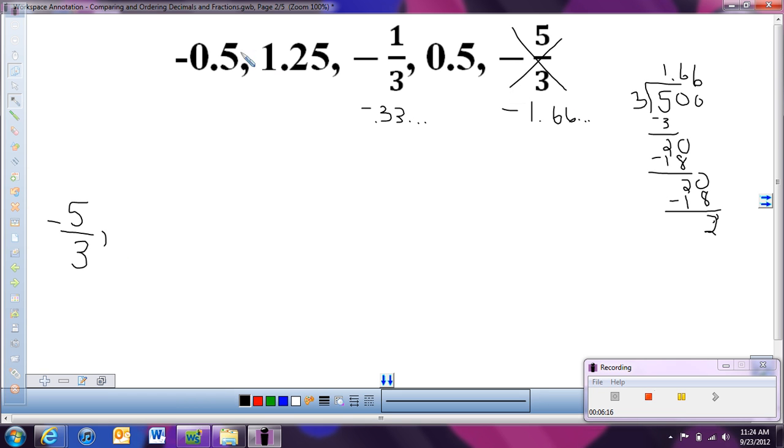And then after that, now I have negative 5 tenths and negative 0.3 repeated over and over again. Now think of it as money, just like you did in the last problem, and which one is smaller, negative 50 cents or negative 33 cents? Well, negative 50 cents would be smaller, because it's the opposite of when we're working with positives. So we'd have negative 0.5, and then negative 1 third. Now we're done with all of our negatives, and we can move on to our positives.